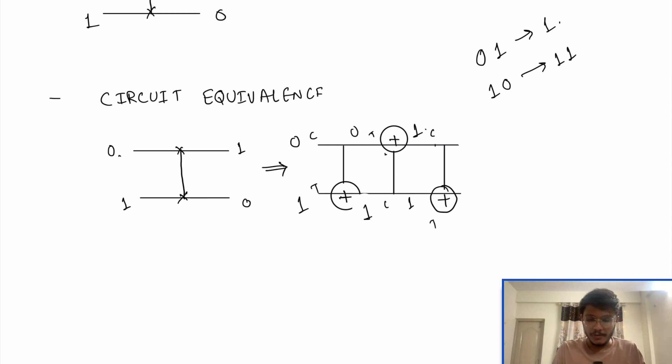And this is how you can see the swap gate implementation using three different CNOT gates.